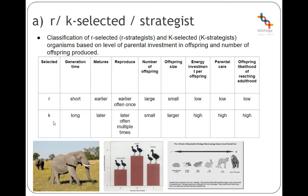K-selected organisms are like elephants. They have long generation times — it takes a long time to reach maturity, and they often reproduce later in life. However, they can reproduce across multiple different seasons and years. They don't produce many offspring, but the offspring tend to be larger with more parental investment per individual, meaning a higher chance of that particular offspring reaching maturity.